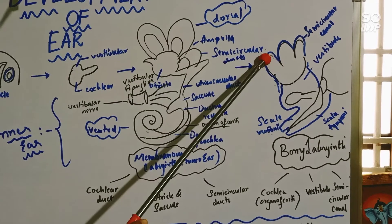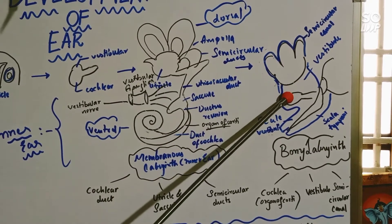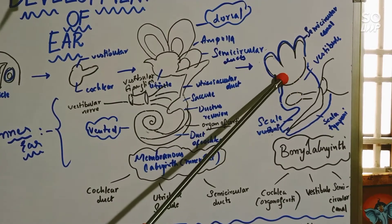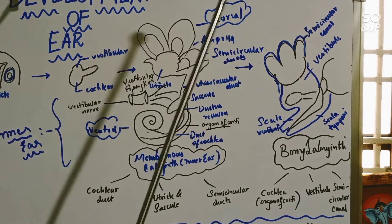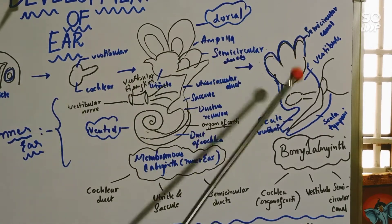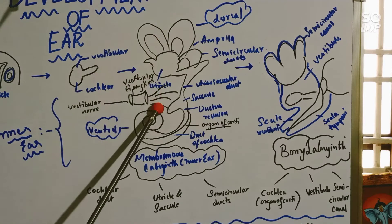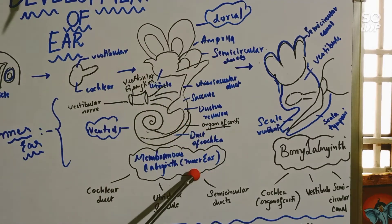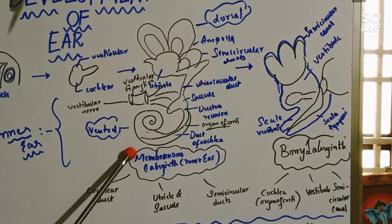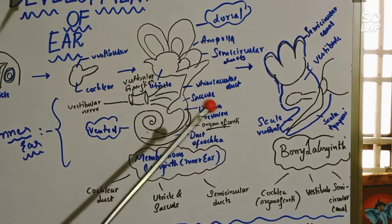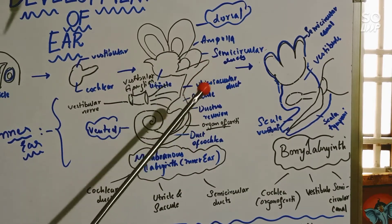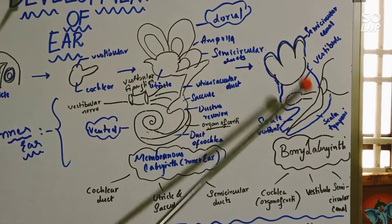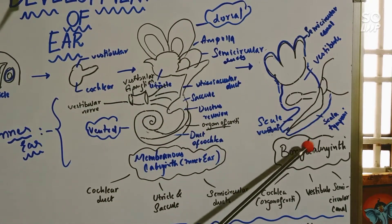Between the cartilage and the membranous labyrinth, there is a layer of periotic tissue, which is filled by the perilymph. It is filled by perilymph in the bony labyrinth and by endolymph in the membranous labyrinth. We can remember it as: the membranous labyrinth is formed first and is the inner layer, so it is made up of endolymph. And it is covered by the bony labyrinth, so the bony labyrinth contains the perilymph.